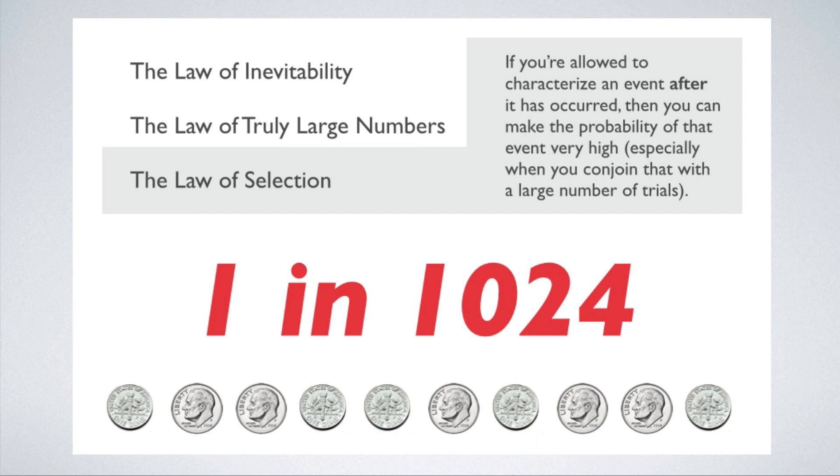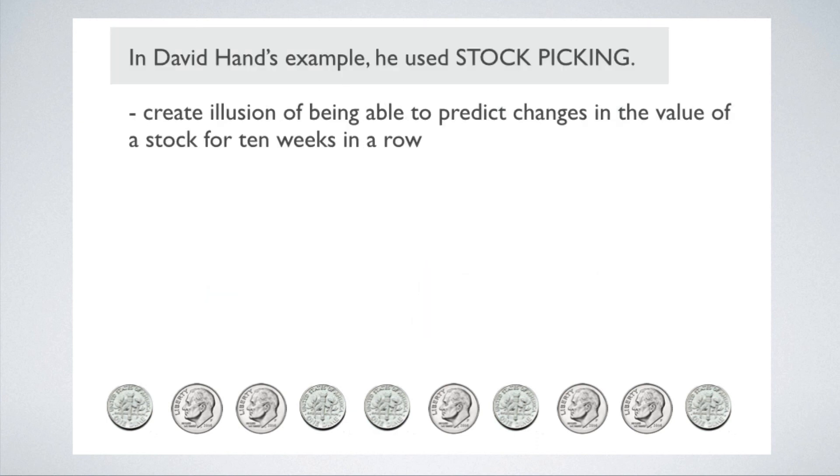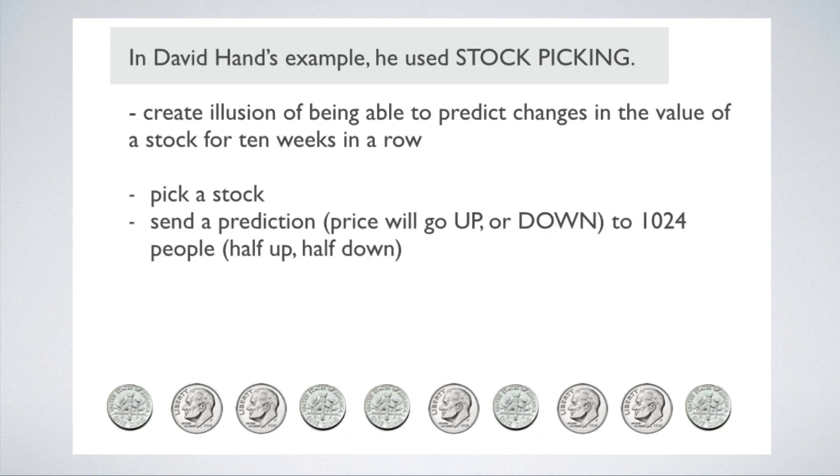Anyway, this gives you an idea of the sorts of factors that can influence our judgments about randomness and coincidences. In David Hand's book, he uses this case to illustrate how the illusion of stock picking skill can be fabricated. It's the exact same setup, except instead of coins, you're looking at the price of a stock. Let's assume that in a given week, the price will either go up or go down. And this is something you can predict. Either the stock price will go up or it'll go down. So you pick a stock and give your prediction to 1,024 people.